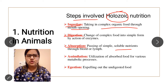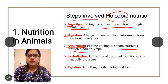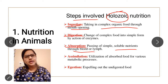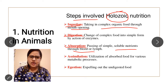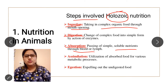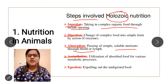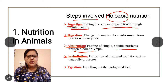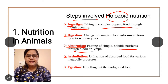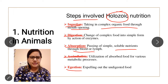After food is completely absorbed, the next step is assimilation — the utilization of absorbed food for various metabolic processes like respiration and digestion. Then the remaining waste material after digestion and absorption is expelled out of the body through egestion.